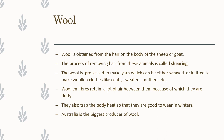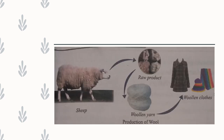Australia is the biggest producer of wool. Here in this process diagram, we can see sheep, and the hairs are removed from the body of sheep. This raw product is used for making woolen yarn, and that woolen yarn is further used for making different kinds of woolen clothes.